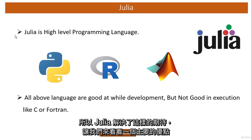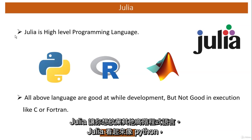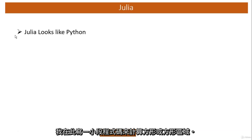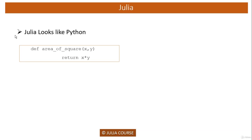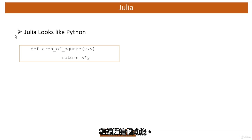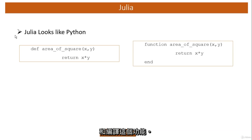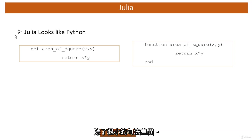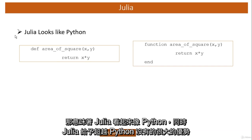Let's see one major advantage Julia gives over other high-level programming languages. Julia looks like Python. I have written here a small snippet of code which calculates the area of a square. This is a very simple Python code function — with just two lines of code in Python we have written this function. The equivalent Julia code you need to write is apart from a very small syntactical difference. So that means Julia looks like Python.